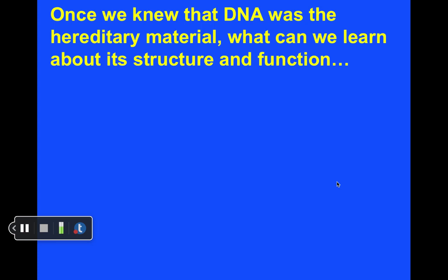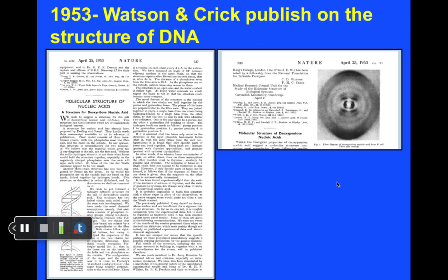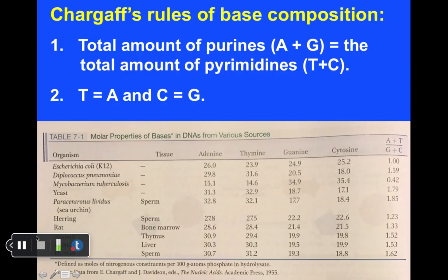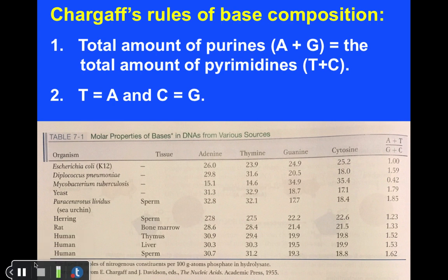Once people knew that DNA was the genetic material, the question became: what can we learn about its structure and function? In the 1950s, Watson and Crick finished their work and published on the structure of DNA—a short paper in Nature in 1953—with profound consequences for our understanding of genetic material and fundamental genetics. Watson and Crick didn't do many experiments themselves, but relied on data from others. One example is data from Chargaff, who took a variety of organisms and measured the amounts of A's, T's, G's, and C's, noticing very distinct patterns.